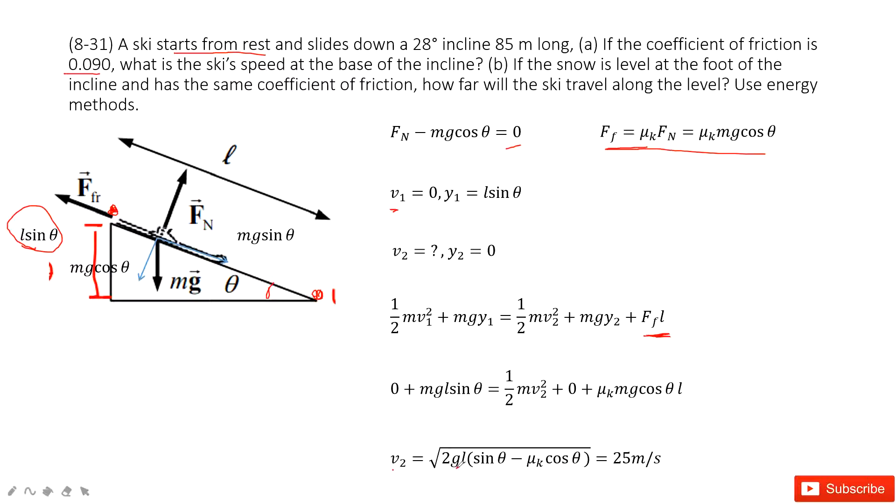Inside, g is constant, L is given, mu_k is given. So very easily, you can find that V2 is 25 meters per second.